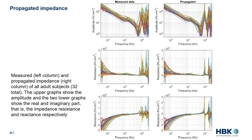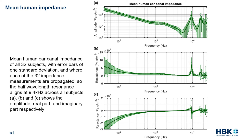From the propagated impedances we are now able to process the data further. The mean human ear canal impedance of all 32 subjects is shown with error bars of one standard deviation. The mean is very well determined from low frequencies up to about 4 to 5 kHz where the standard deviation is about 20 to 30 percent of the mean. From 4 to 5 kHz up to 13 to 14 kHz the impedance is fairly well determined, with the standard deviation raising to about 50 to 90 percent of the mean. Beyond 13 to 14 kHz, the impedance is poorly determined since the standard deviation generally exceeds the mean.